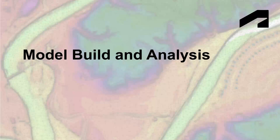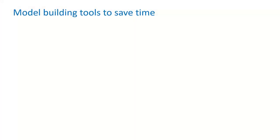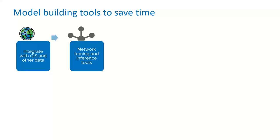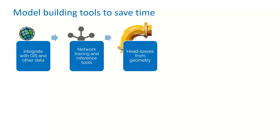Now we'll look at the model build and analysis aspects of ICM. ICM has everything you need to start building your model — from utilizing data sources to performing in-depth statistical analyses. ICM can integrate with GIS and other data sources, or import an EPA SWMM model. Once data is loaded, you can utilize the network tracing and inferencing tools to review imported data, check for anything missed during field surveys or during the data handoff, fill in gaps so you can begin modeling, and flag anything that was inferred so you have full visibility on data sources.